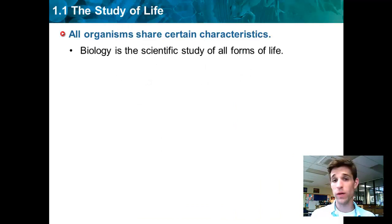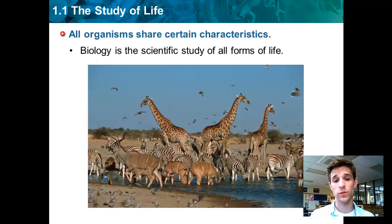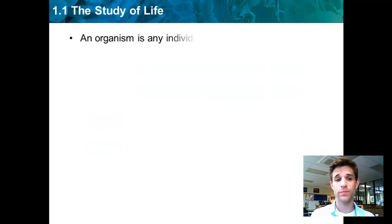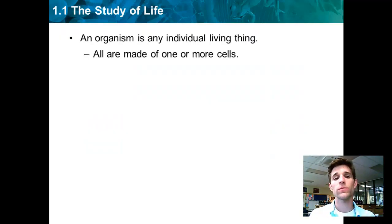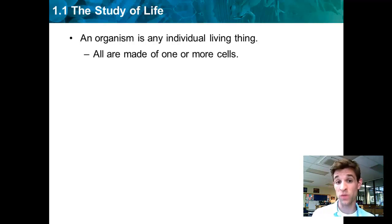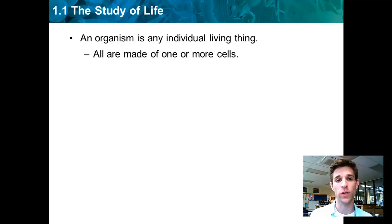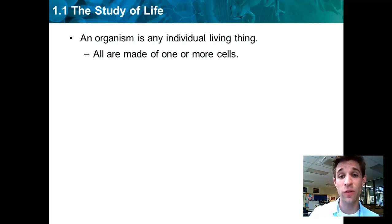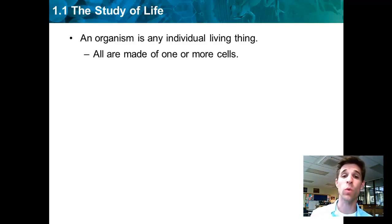Now, all organisms, despite what species they are, share certain characteristics. All are made of one or more cells. A single-celled bacterium is made of one cell, and a human is a multicellular organism made of hundreds of trillions of cells working together. You have to be made of at least one cell to be called a living thing.